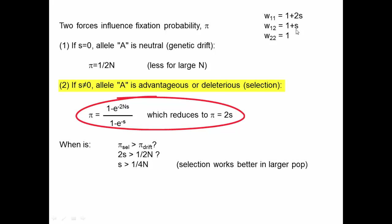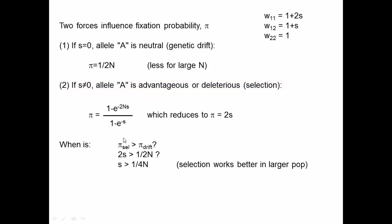Here s is the advantage seen in the heterozygote. When is the probability of fixing due to selection larger than fixing due to drift alone? That's when 2s > 1/2N, or dividing both sides by 2, when s > 1/4N. As N gets larger, the threshold for s to exceed 1/4N gets lower and lower, so more minor advantages will have a higher chance of fixing than neutral alleles. Selection works better in larger populations.